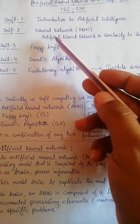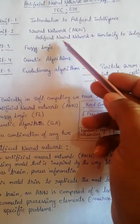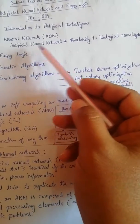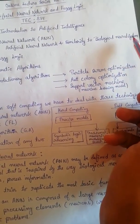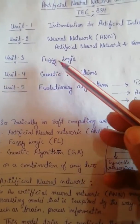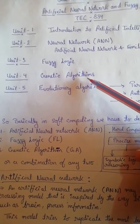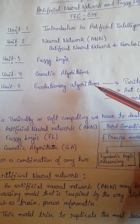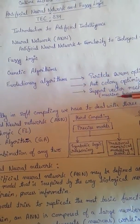As you can see, the second unit is about artificial neural network, and here we will discuss the similarities of artificial neural network with the biological neural network system. In unit 3 we will discuss fuzzy logic, in unit 4 we will discuss genetic algorithms, and in unit 5 we will discuss evolutionary algorithms — there are a few evolutionary algorithms which we will cover.